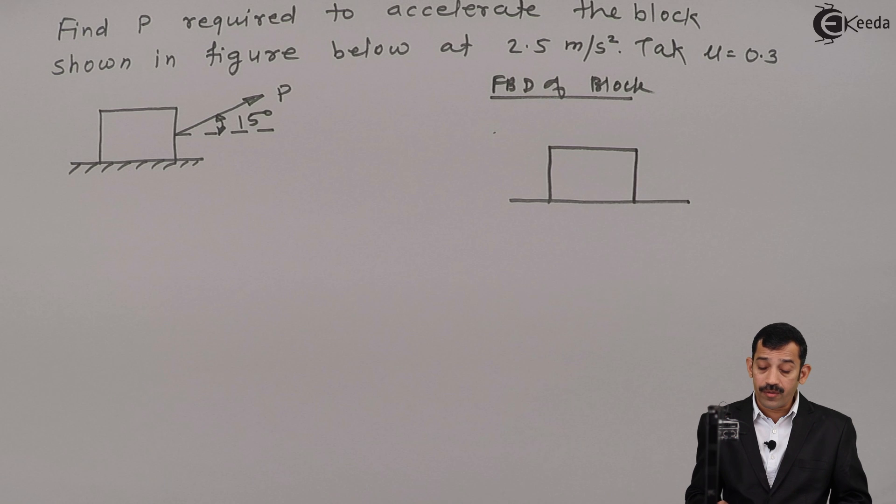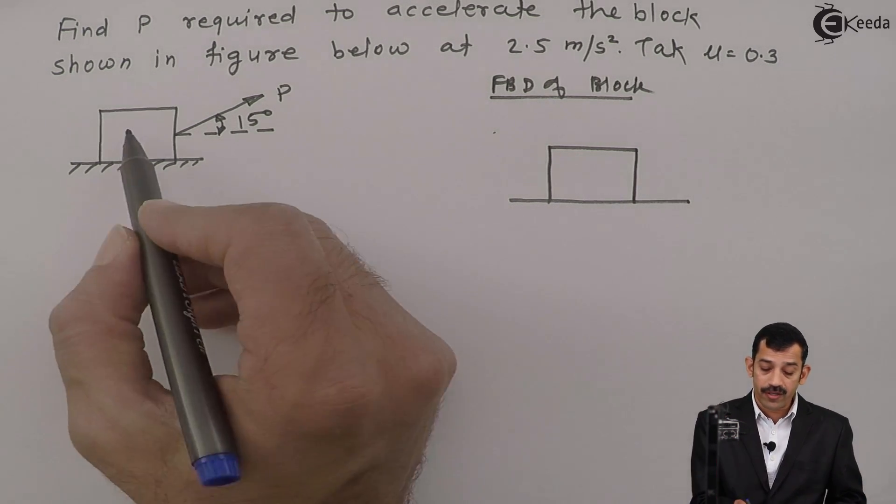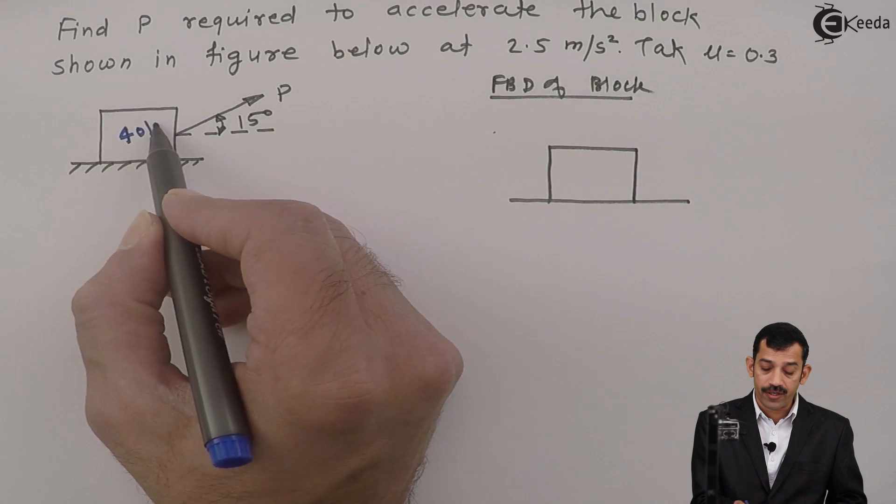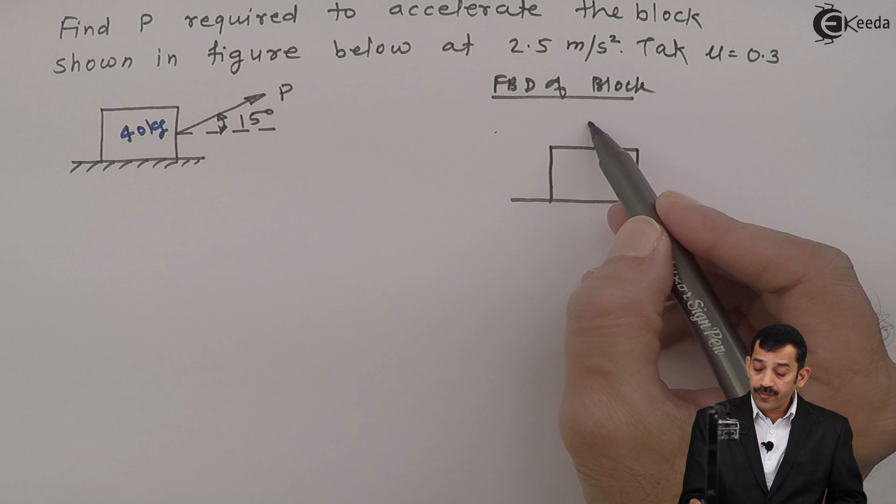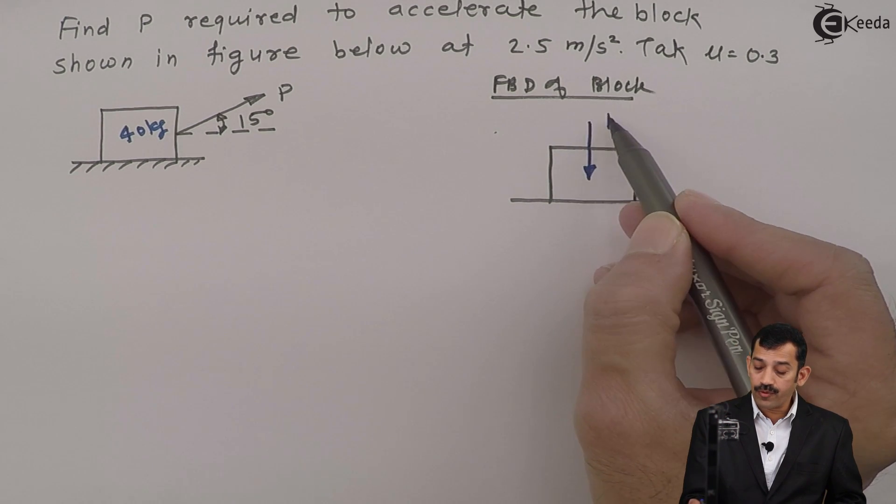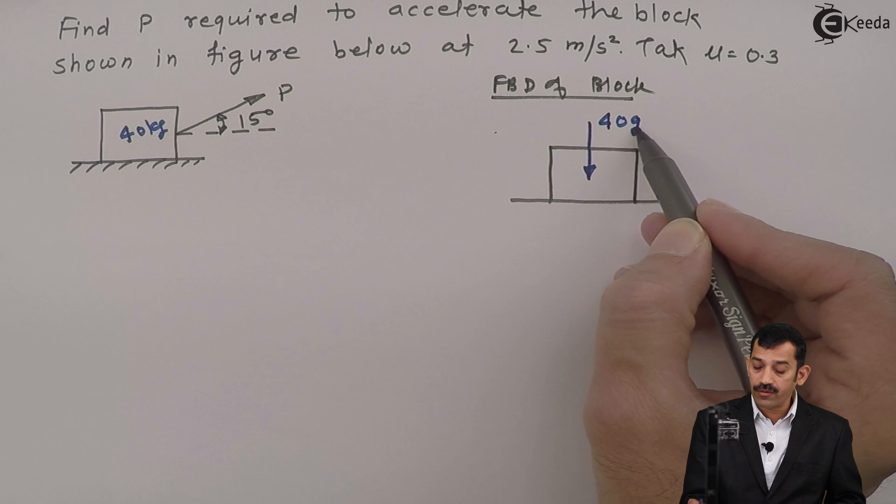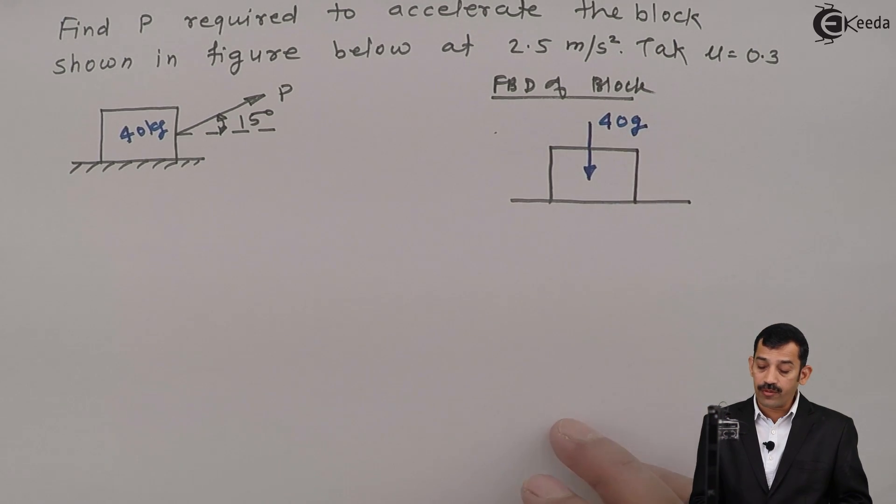Now what is the mass of this block? The mass of this block is given as 40 kg. The weight of this box is 40 times acceleration due to gravity g, that is 9.81.